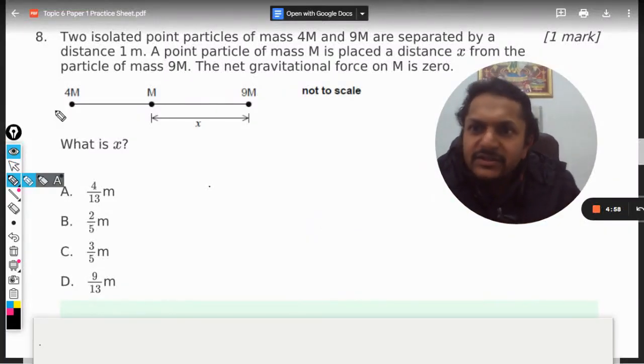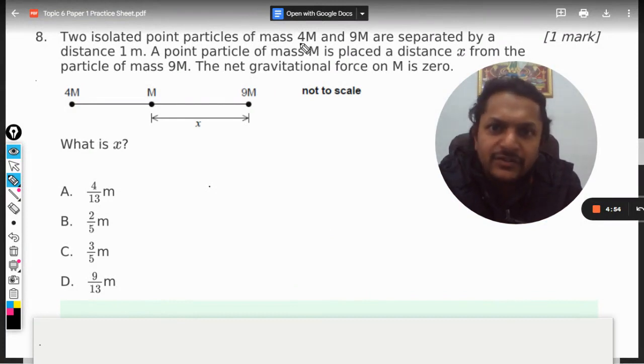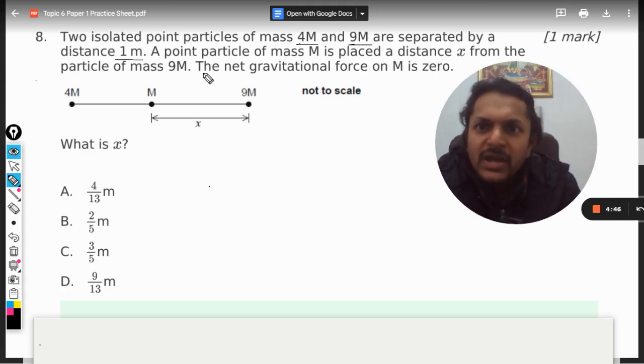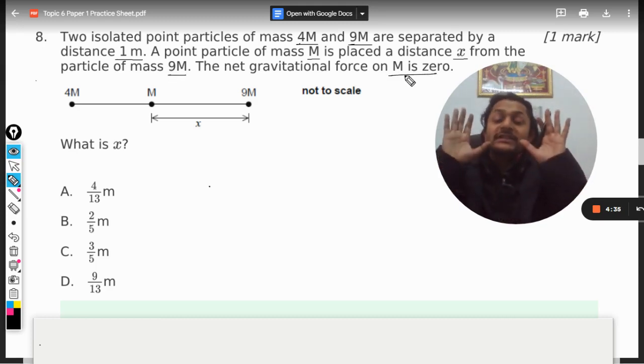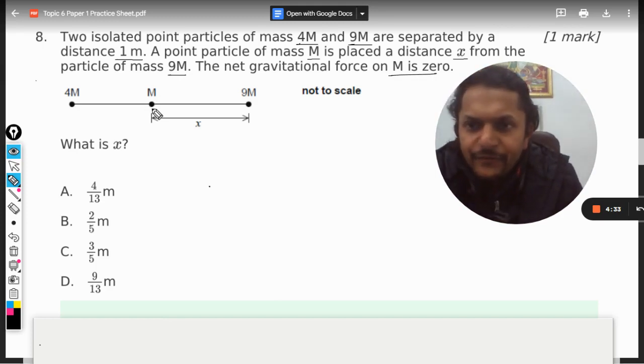Okay dear students, let us see what is there in this question. Two isolated point particles of mass 4m and 9m are separated by a distance of 1 meter. A point particle of mass m is placed at a distance x from the particle of mass 9m. The net gravitational force on m is zero. Find the value of x.